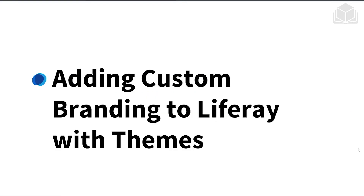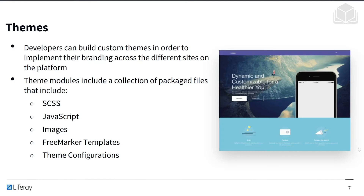Let's talk about adding custom branding to Liferay with themes. We can think of themes as a set of stylings or templates that unify how pages of a particular site look — for example, using a particular template, specific font, font size, or font color. Developers can build custom themes to implement branding across different sites on the platform. Theme modules include a collection of package files: SCSS, JavaScript, images, FreeMarker templates, and theme configurations.